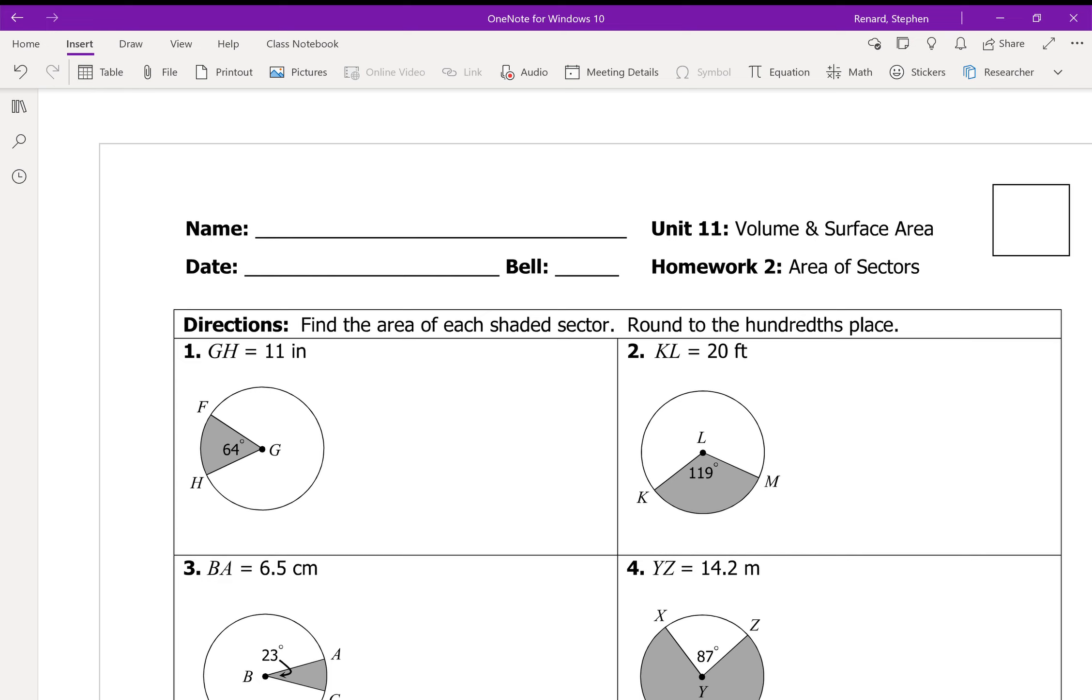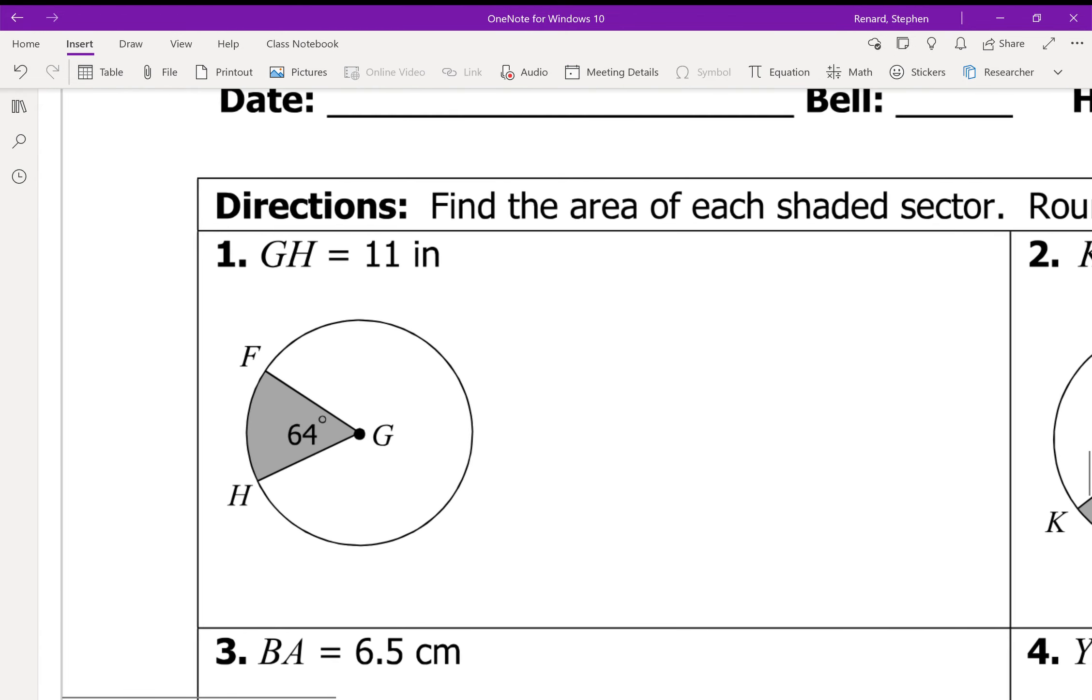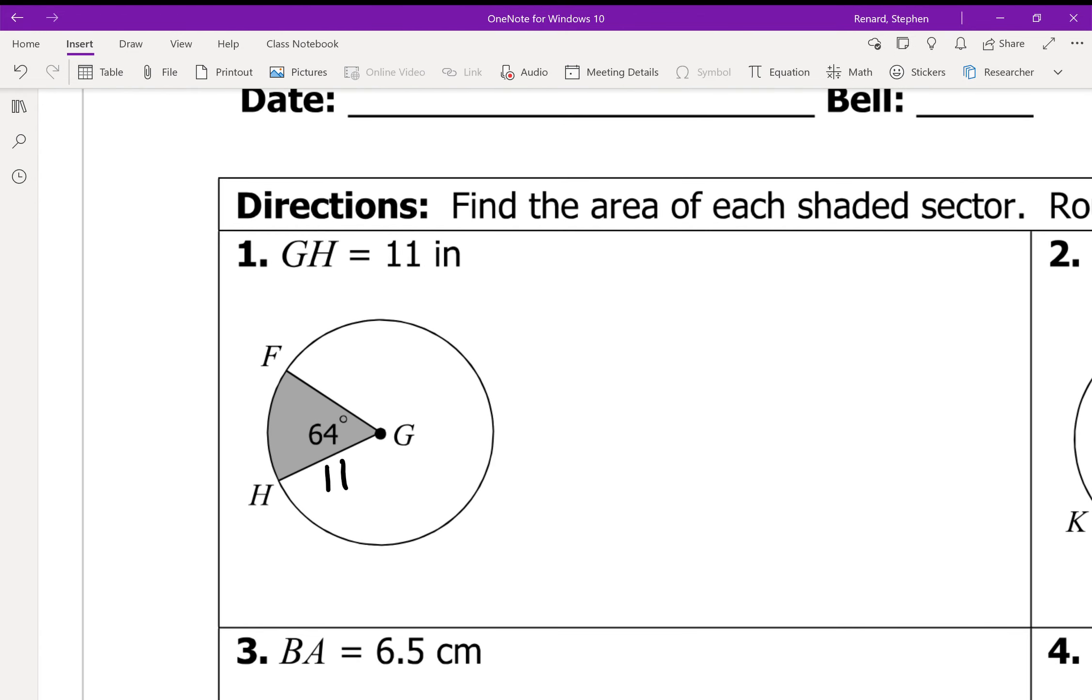Find the area of each shaded sector around the nearest hundredths place. So here we know that GH is 11. What we're going to do is start off by finding the entire area. We know area is pi r squared, right? So that's going to be pi times 11 squared or 121 pi. Because it asks for to the nearest hundredth, we might as well get that out of the way. We're going to get 380.13. So the area of the total thing is 380.13 inches squared.